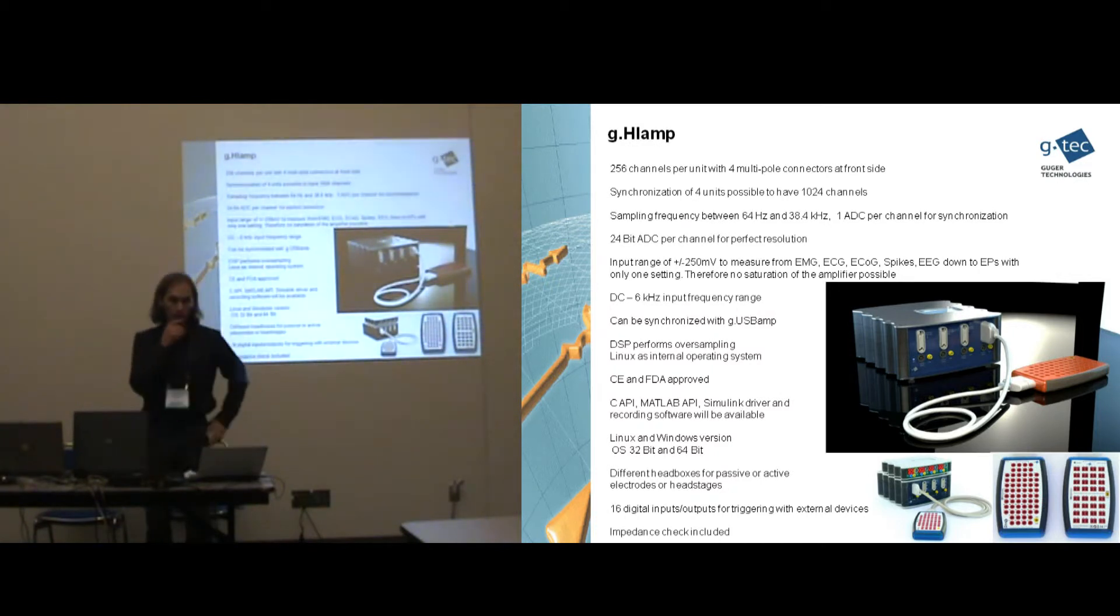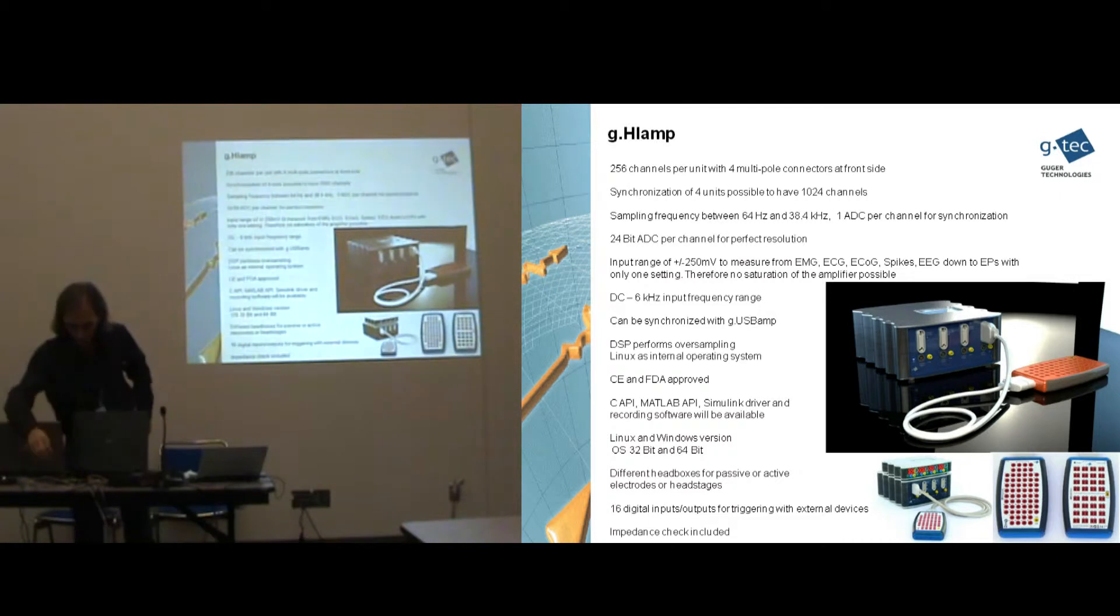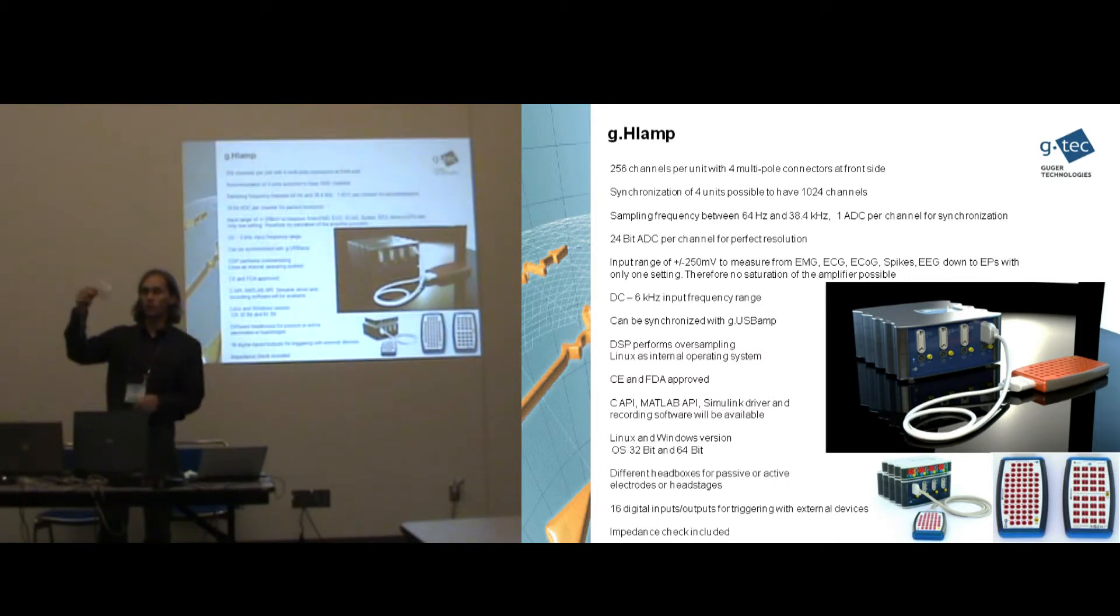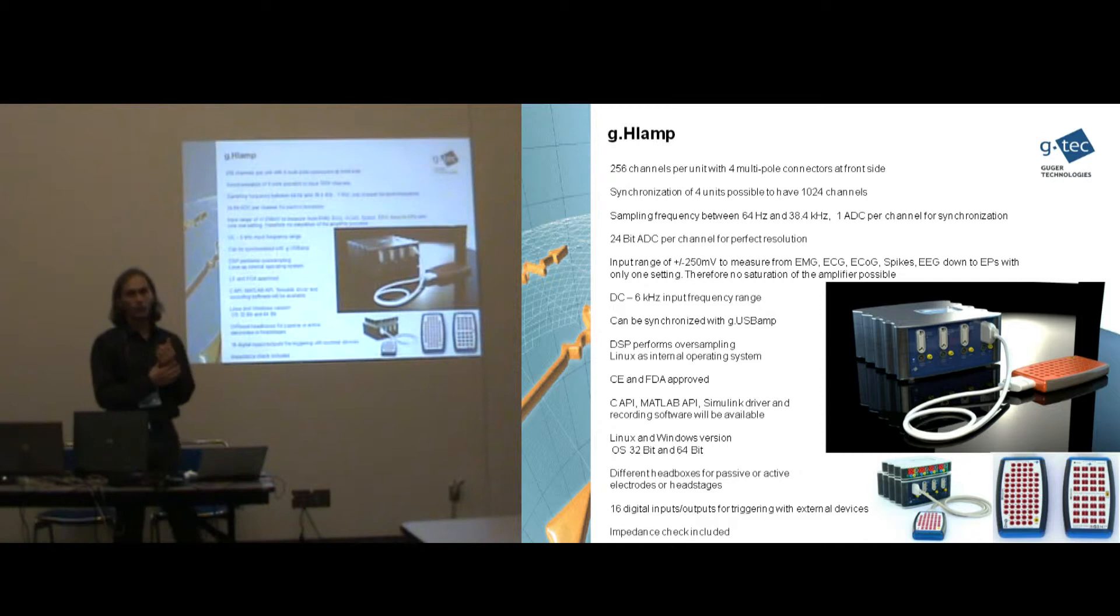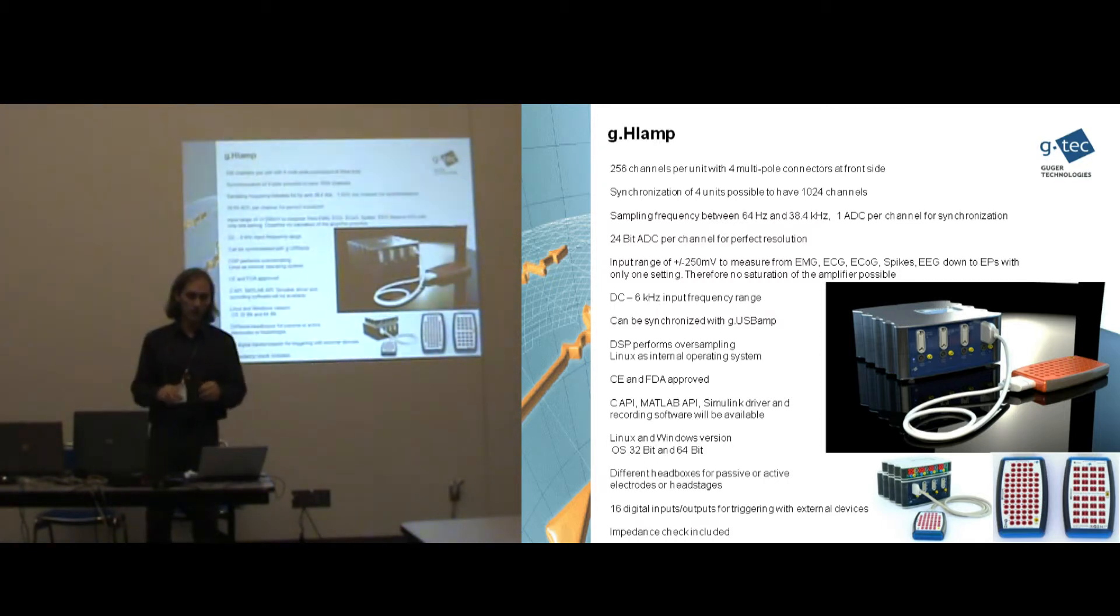This is another amplifier that we finished recently. It's a 256 channel device which is especially important for ECoG recordings. Where you are using larger grids to pick up the activity. So here is one from AdTech with 64 electrodes in this case. And the inter-electrode distance is one centimeter. I can also pass it around. And recently many people are working on micro ECoG recordings where the electrodes are closer together. This yields of course to a high demand of many channels. And therefore you can also stack these devices to record up to 1000 channels.